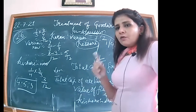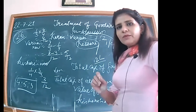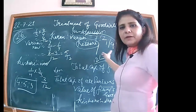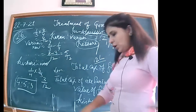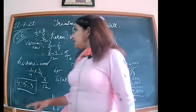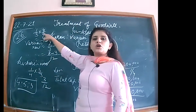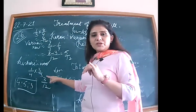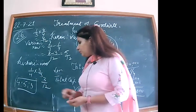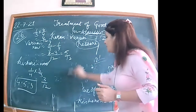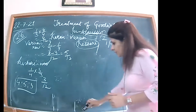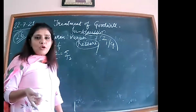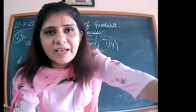What made this question different: first, the value of goodwill was not given — it was hidden; second, only one partner (Varun) is sacrificing. The new share was calculated by minusing Varun's sacrifice from his previous share and using LCM 12 for like fractions. Kishore is not bringing goodwill in cash, so we cannot open the premium for goodwill account. Instead, we debit Kishore's current account.